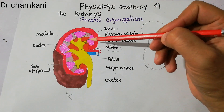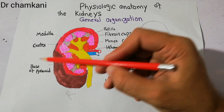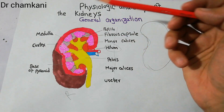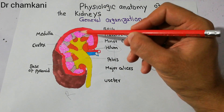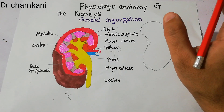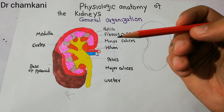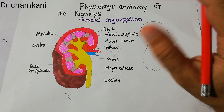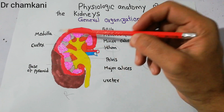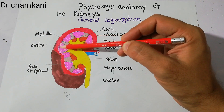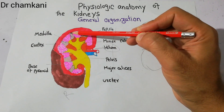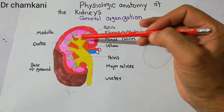Inside the medulla there are pyramid-shaped structures. These pyramid-shaped structures are full of nephrons. The nephron is the functional unit of the kidney, performing activities inside the kidney, and nephrons are present in these pyramid-shaped structures. The base of the pyramid is present at the junction of the cortex and medulla, and the pyramid is made of nephrons.